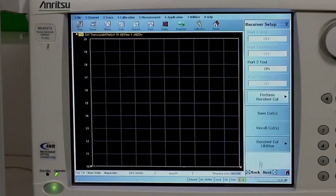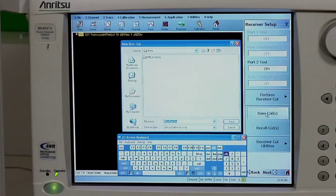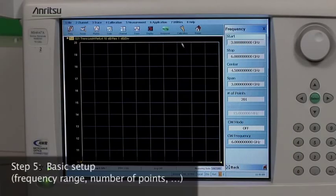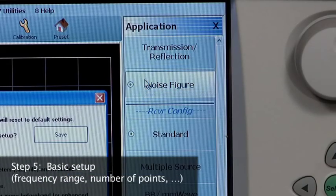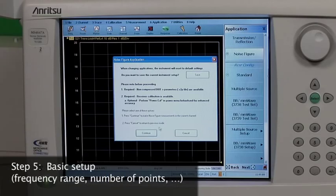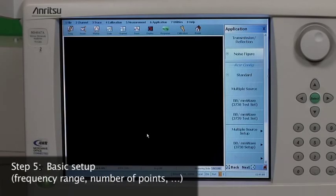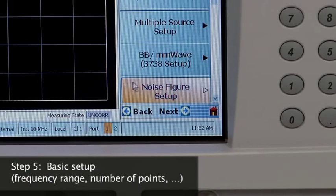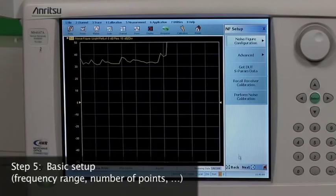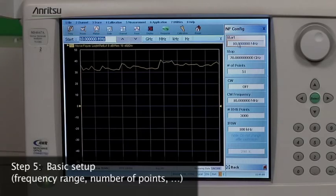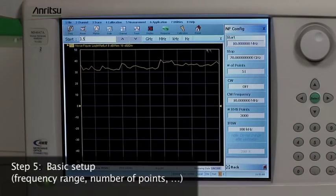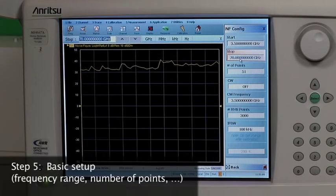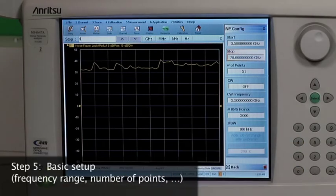When complete, we saved the receiver calibration. We are now ready for step five, noise figure measurement configuration. For this demonstration, we are going to measure the noise figure of our amplifier from 3.5 to 4 GHz, with 201 frequency steps and 3,000 RMS points per noise computation. Trade-offs can be made between the measurement speed and data jitter by adjusting the number of RMS points.